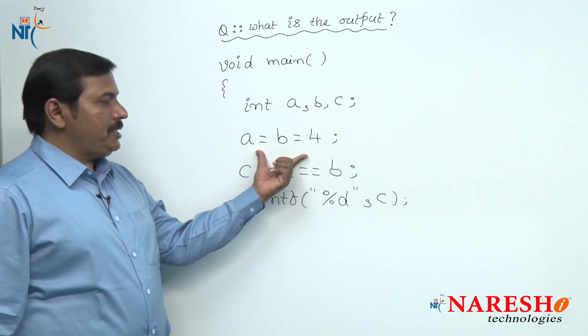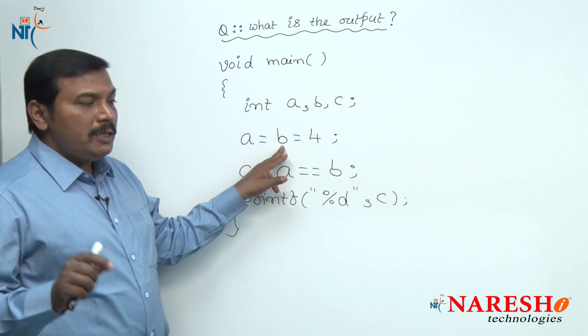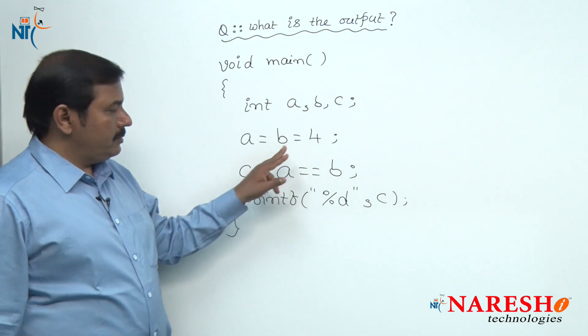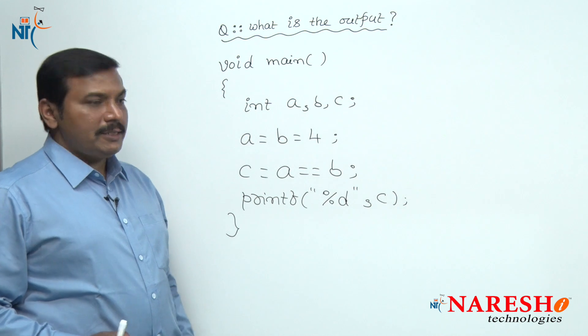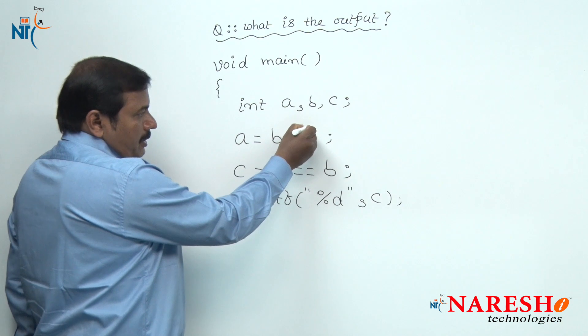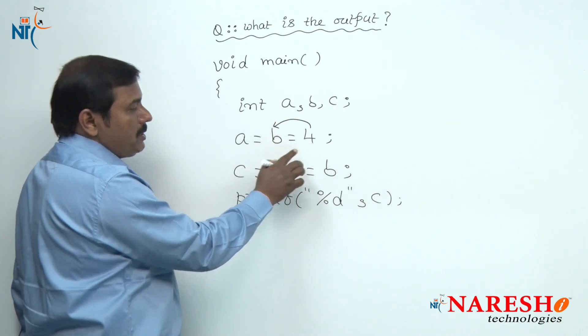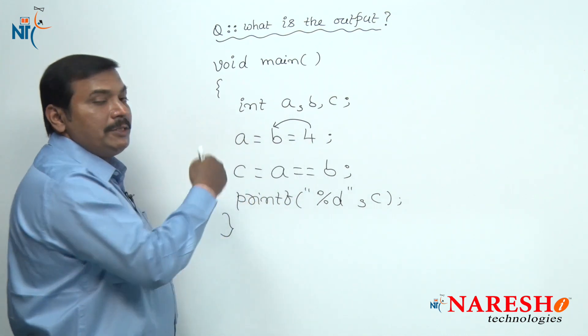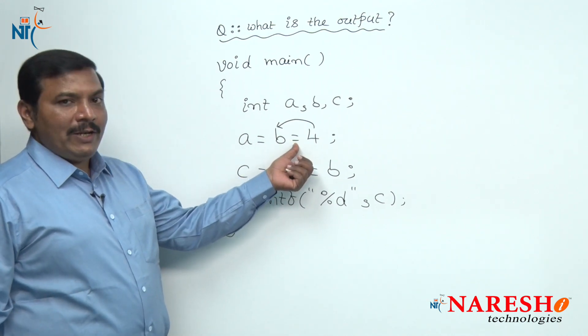In this expression, a value is assigned to several variables A, B using multiple assignment operators. Both operators are assignment operators. In this expression, the right side value 4 is first assigned to B, because the associativity of the assignment operator is right to left. Hence, this operator is evaluated first.